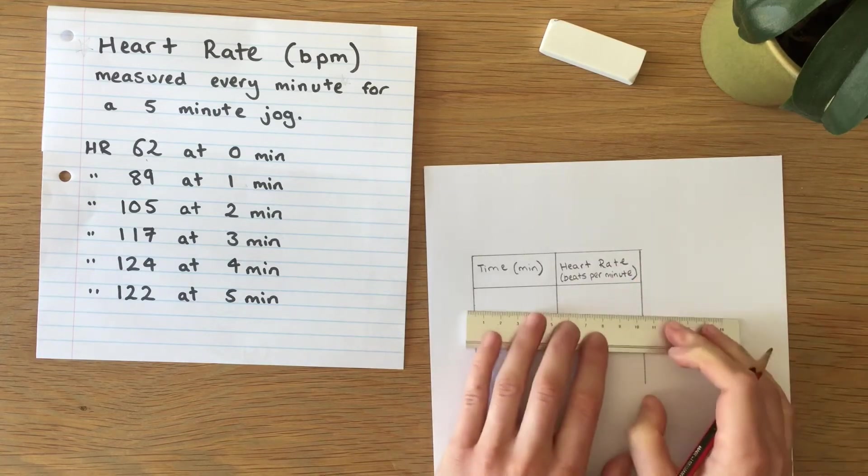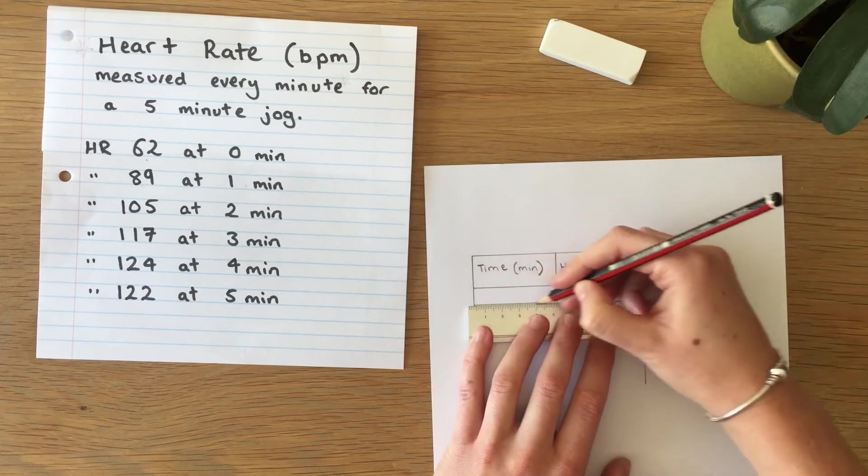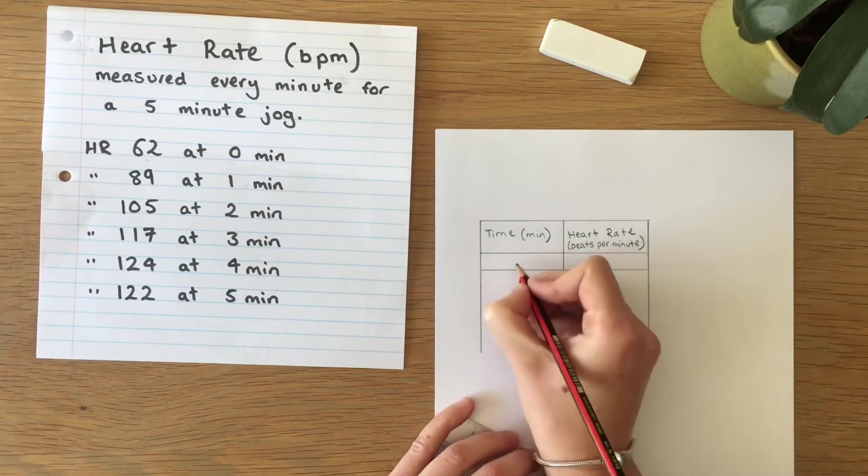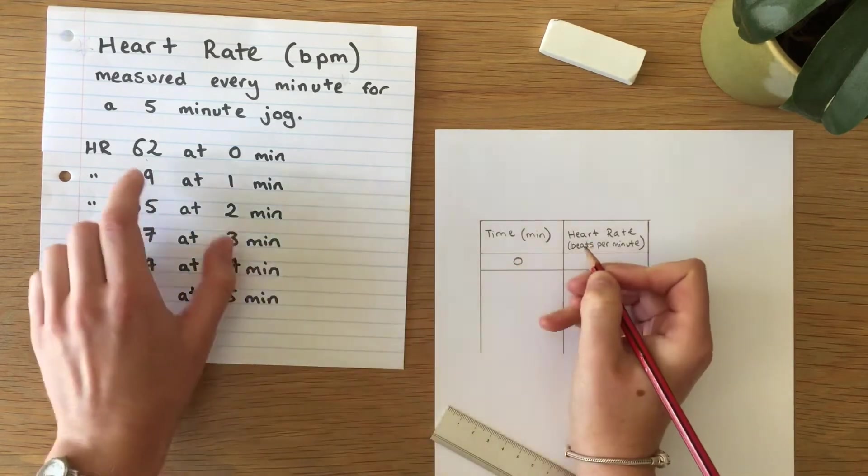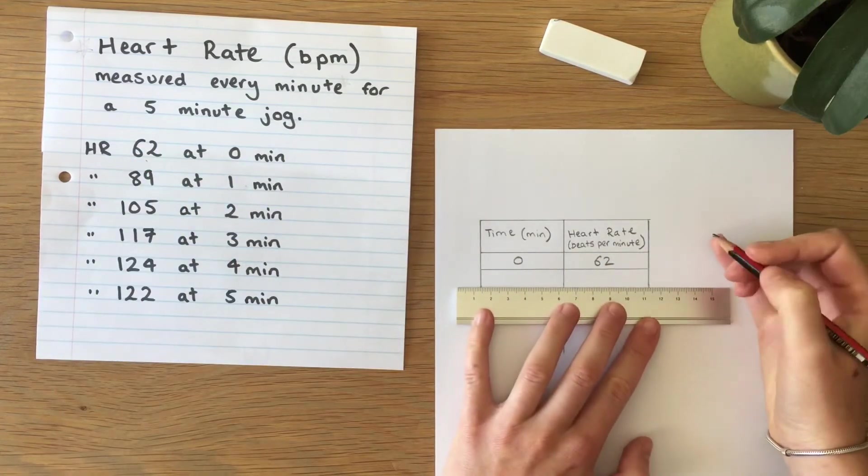Now we need to add our data into the next few rows. So we're starting at zero and we can see that heart rate is 62 at the beginning of our jog.